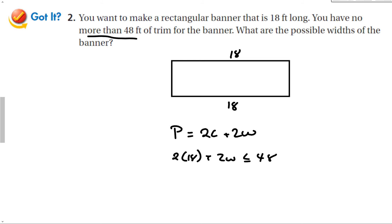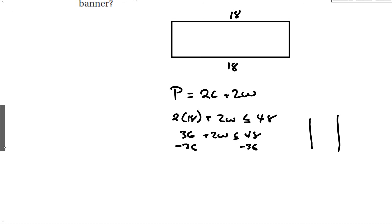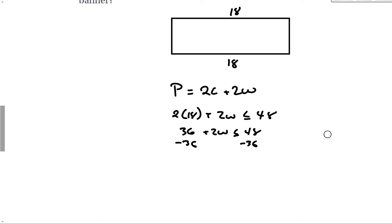2 times 18 is 36. Subtract 36 from both sides, which gives me 2w is less than or equal to 12. Divide out the 2, and we have w is less than or equal to 6.